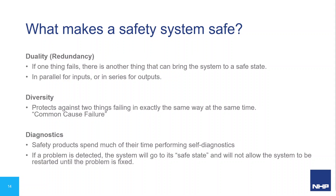What about a safety control system makes it safer than any other control system? Three Ds: Duality, Diversity, and Diagnostics. Duality, or redundancy, ensures failover in our system so that if a fault occurs somewhere in the safety control system, it can still operate effectively and bring the machine to a safe state — typically realized as multiple devices operating in parallel or in series.